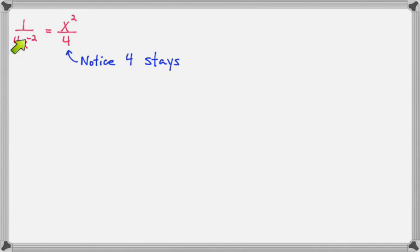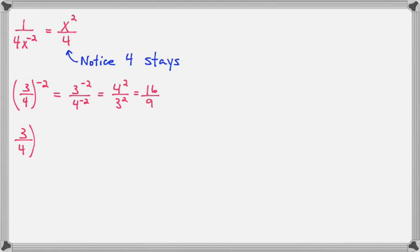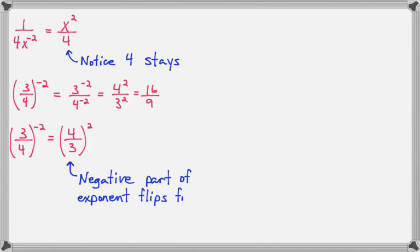So I want to take a look again at 1 over 4x to the negative 2. The 4 has to stay in the denominator because its exponent was already 1 — it's very important. On this fraction, 3 fourths to the negative 2, we did it one way already, but I also want you to realize you can think of the 3 fourths as one entire piece, and the negative makes it flip over. So instead of applying the negative 2 to the top and bottom separately, think of the negative as making the fraction flip, and now it's positive. If you flip it over, the exponent's positive, and you still end up with 16 over 9. A negative exponent on a fraction can simply be thought of as flipping the fraction over.